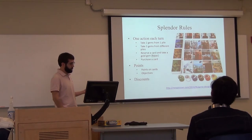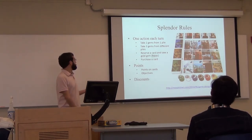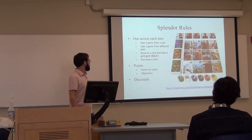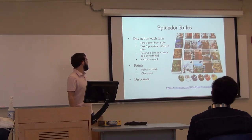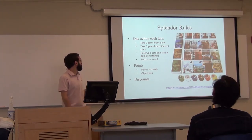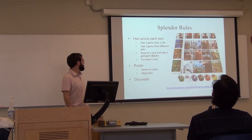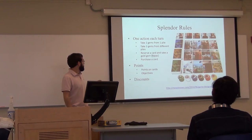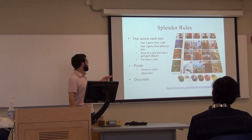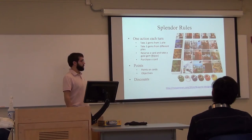Splendor rules are relatively simple. Each turn you can take one action. There are five piles of gems that you can take from normally - green, white, blue, black, and red. You can take two gems from one pile if it has four or more gems left in it. You can take three gems from different piles. Alternately, you can reserve a card from the board and take a gold gem on the right that acts as any kind of color. And also, you can purchase a card.